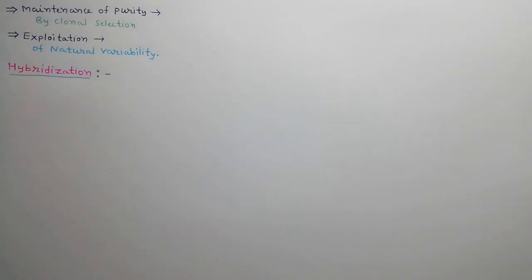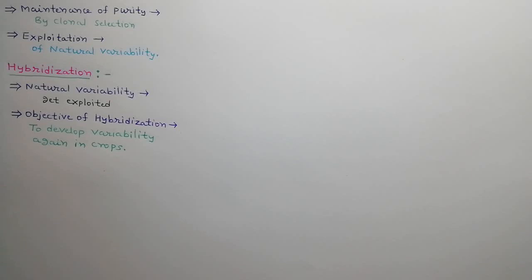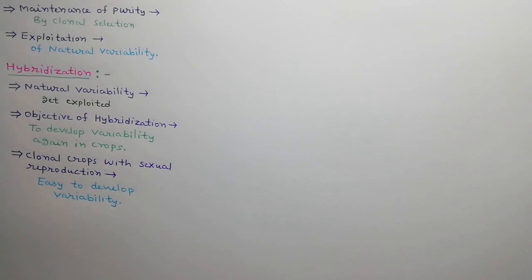Now we will discuss about hybridization. Due to clonal selection, natural variability of crops gets exploited. Hence, further selection and improvement is not possible in these crops. Hybridization is used to develop variability again in these crops so that further selection and improvement can be made possible. Those clonal crops in which sexual reproduction is also found, variability can be produced easily by hybridization.